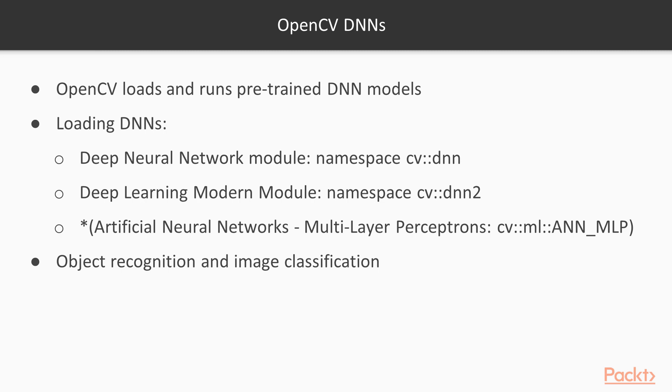In order to keep up with the fast pace of DNN development, OpenCV is also integrating the externally developed, header-only, tiny DNN library under the cv::dnn2 Deep Learning Modern module. This module is still being developed, and thus supports less import features than the cv::dnn module. It is currently found only in post-3.2 version development branches on the OpenCV Contrib repository.